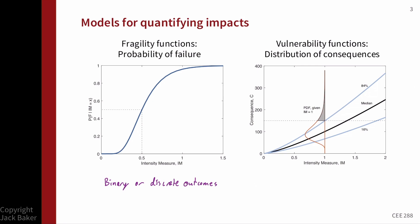The other situation we face is that we might have some sort of distribution of consequences — repair cost is an easy one to think about. I'm pointing at the vertical axis on both plots in terms of the outcomes. So now we have the intensity measure again, some level of ground shaking intensity, but instead of a binary yes-no outcome, we have some probability distribution of that consequence. We can then compute the probability of that consequence exceeding some threshold, as indicated by the shaded region.